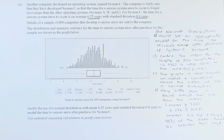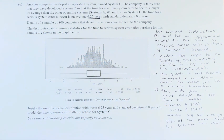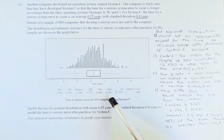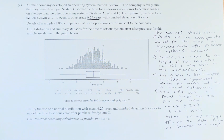So it sounds very complicated but it is not. You need to justify whether this graph or this statistic justifies the use of System C for the normal distribution. My answer would be: the normal distribution would be a perfect model for the time to serious error after purchase of System C because, first, looking at the center, the mean is 6.236 and the median is 6.246. In a normal distribution, the mean and the median are very close or very similar, so that's a good point supporting the normal distribution model.